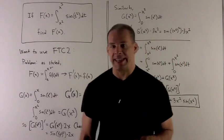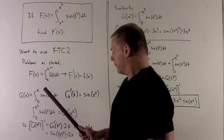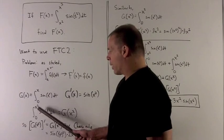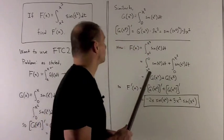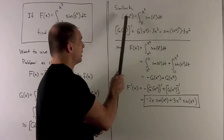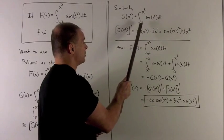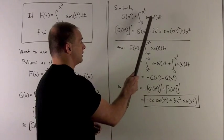I'm going to apply that trick again to the same function, only now we're going to do G of X cubed. So let's take a look. G of X cubed, we're going from 0 to X cubed sine of t squared dt.